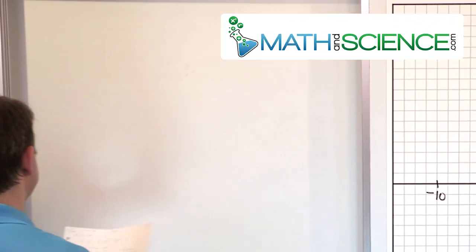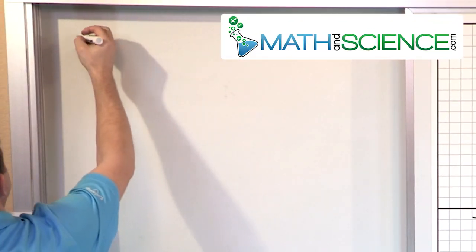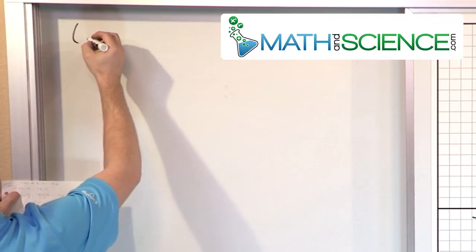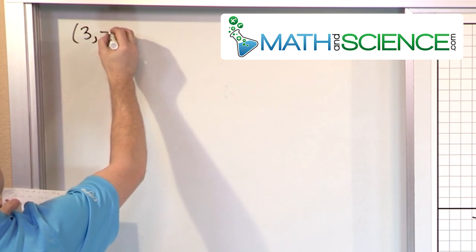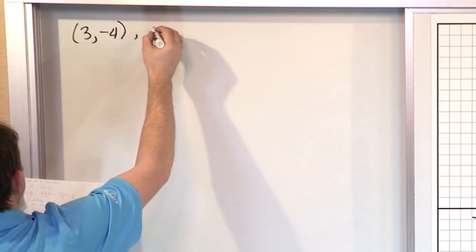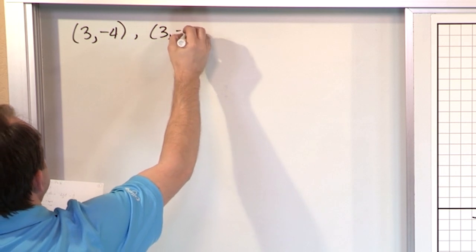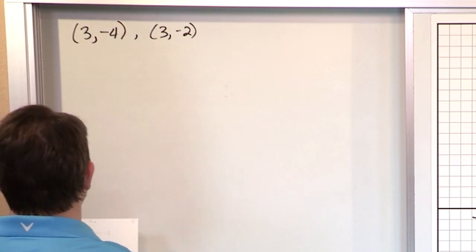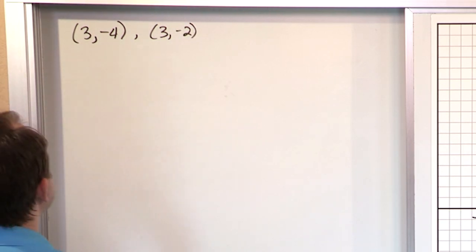We're going to go through a couple of quick examples. Let's take a look at the point (3, -4) and the point (3, -2), and we want to calculate the slope of the line.